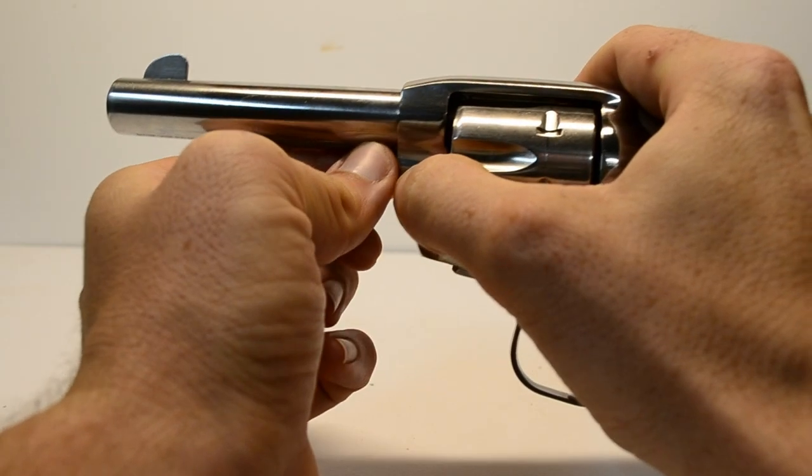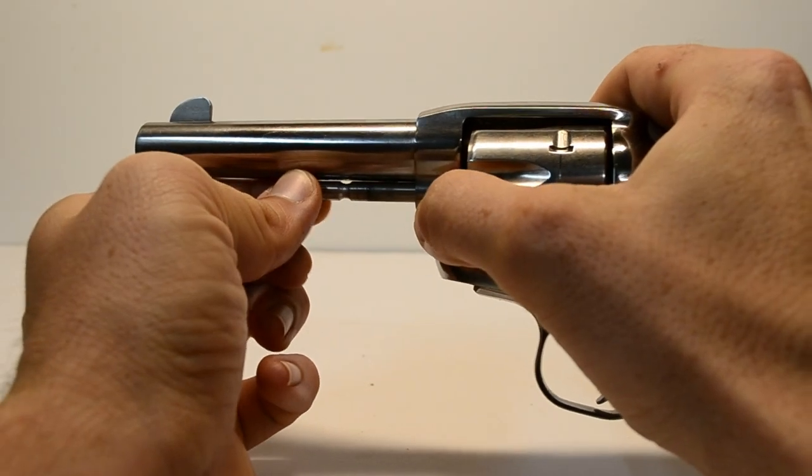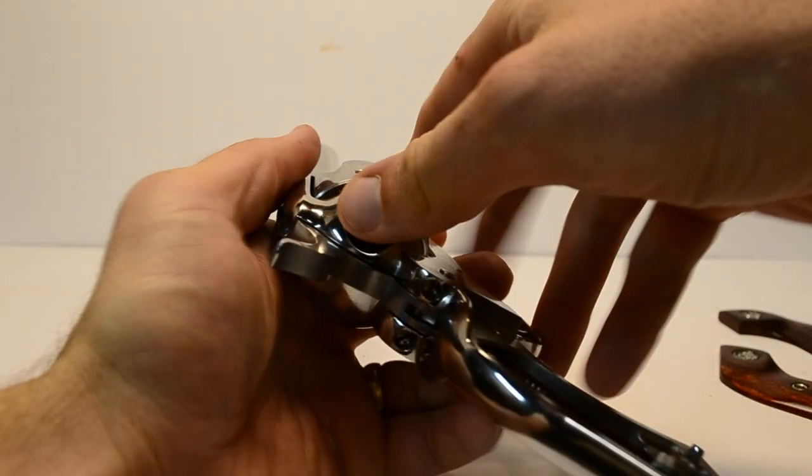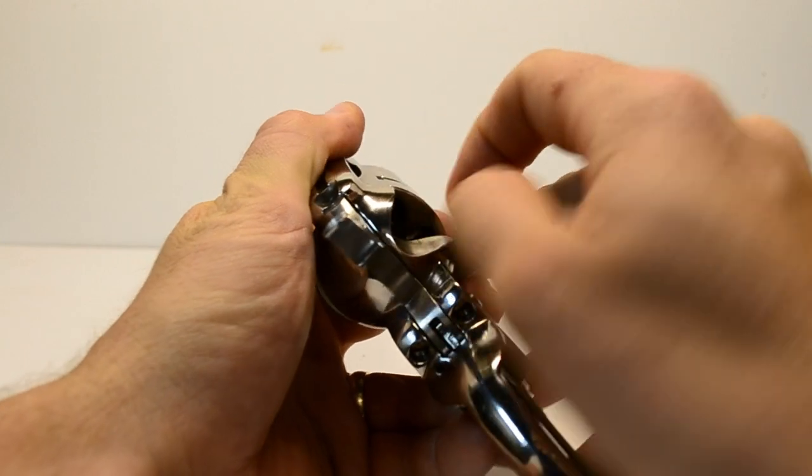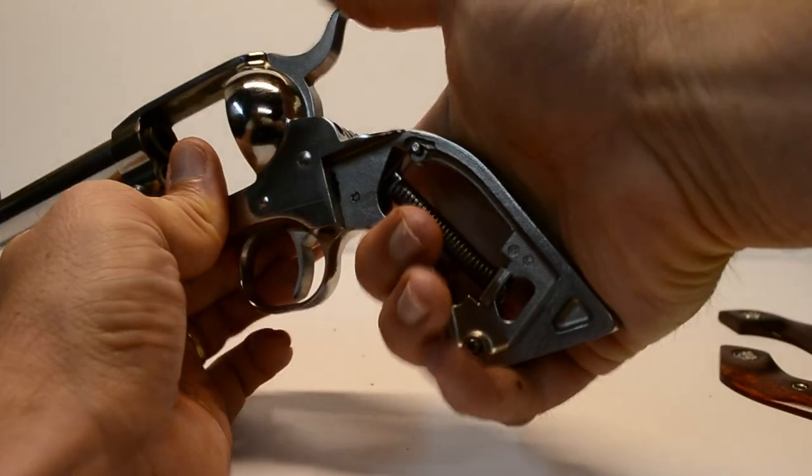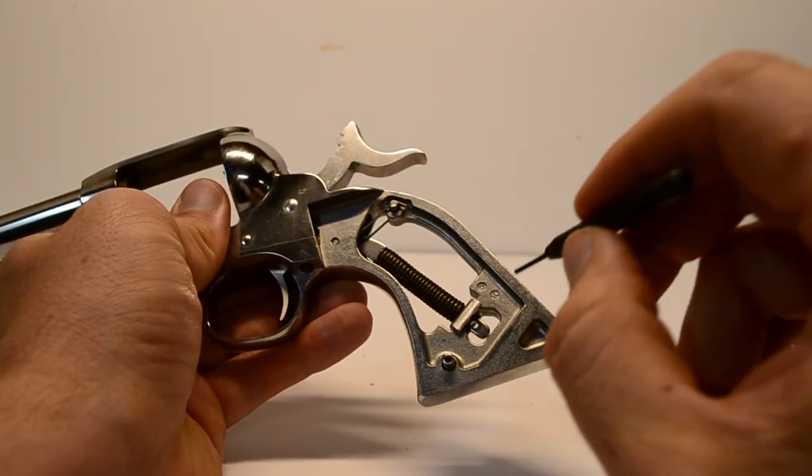Press the base pin latch and remove the base pin assembly. Open the loading gate and remove the cylinder. Close the loading gate and pull the hammer back to the full cock position.